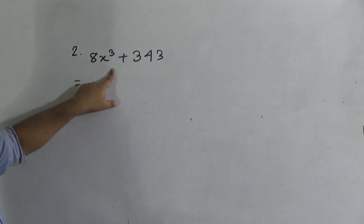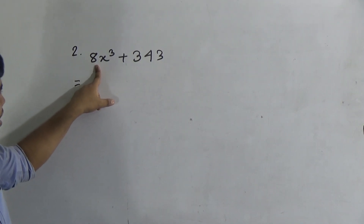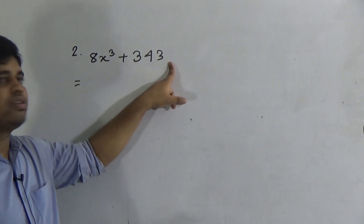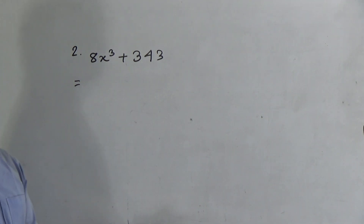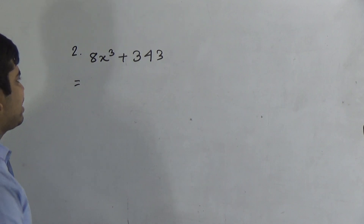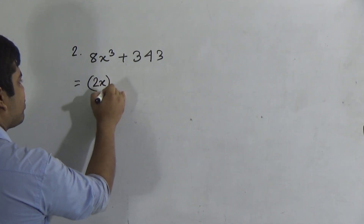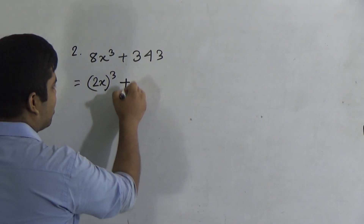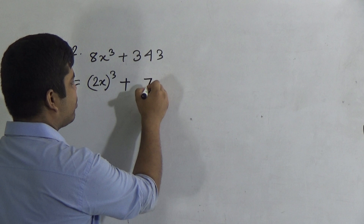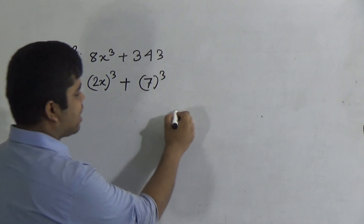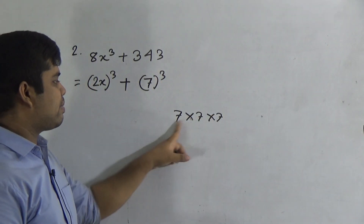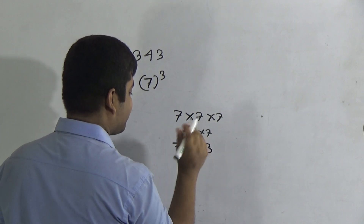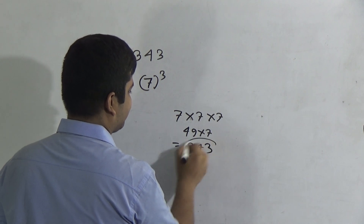Notice: 8x³ can be written as (2x)³, and 343 is the cube of 7 — because 7 × 7 × 7 = 343. So we can write 8x³ + 343 as (2x)³ + 7³. Now the a³ + b³ formula is applicable. So: (2x + 7)[(2x)² − (2x)(7) + 7²] = (2x + 7)(4x² − 14x + 49). This is the answer.